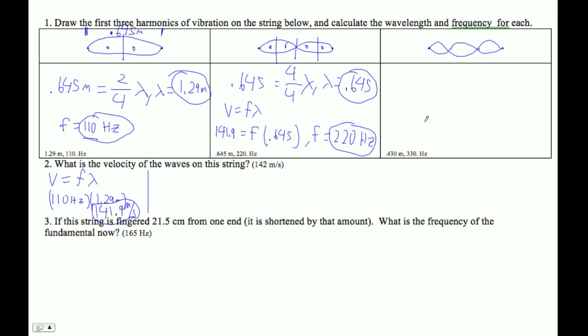And then the next one here, this has got these three things in there. I didn't draw it very well, but this is one, two, three, four, five, six-quarter wavelengths. So 0.645 equals six-quarter wavelengths, so the wavelength is going to be four times this divided by six. So four times 0.645 divided by six is 0.43, so lambda is 0.43.